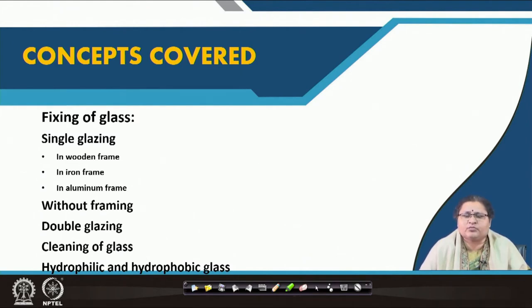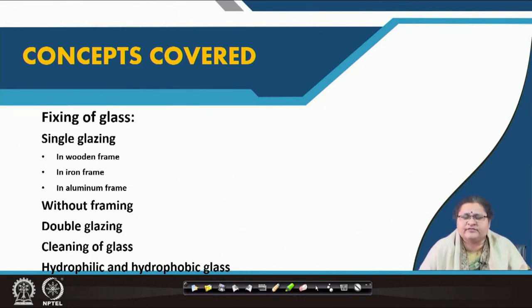In our country context, we mostly go for single glazing — that is only one layer of glass, one piece of glass protecting from the environment and giving you visibility. At the same time you have to remember it should be safe enough — it should not fall off from the system where it is being placed.